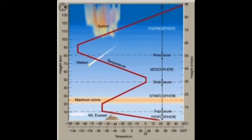Why does temperature decrease as you go higher? The troposphere gases absorb very little of the incoming solar radiation. Instead, the ground absorbs this radiation and then heats the tropospheric air by conduction and convection. Also, high up in the troposphere there is thin air, which absorbs very little solar radiation. Because of this, the temperature in the troposphere decreases with increase in altitude.